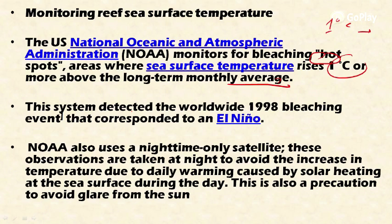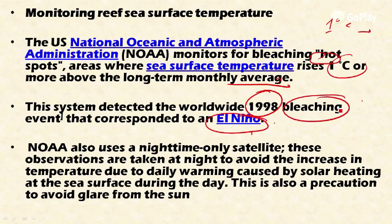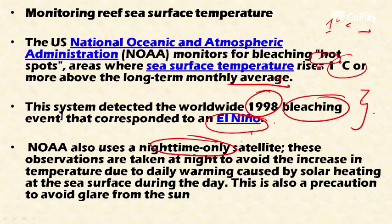If sea temperature increases one degree or more over several months, these are monitored by NOAA. They found that in 1998 there was widespread destruction of coral reefs due to coral bleaching, caused by the El Niño event which resulted in variation in seawater temperature. NOAA also uses nighttime-only satellite data to monitor nighttime temperature, since daytime seawater is heated by direct sunlight, allowing them to track the effect of higher temperatures on coral reefs.